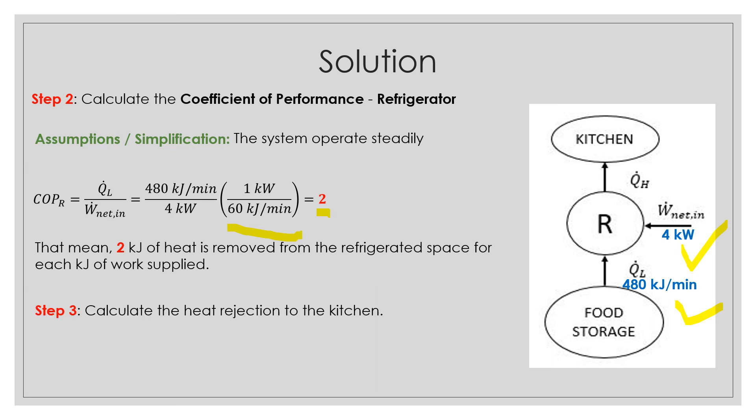And then step 3, calculate the heat rejection to the kitchen. To obtain the Q_H, we use this equation Q_L plus work net in which is 480 kJ per minute plus 4 kW times 60 kJ per minute over 1 kW to obtain the final answer in the form of 720 kJ per minute.